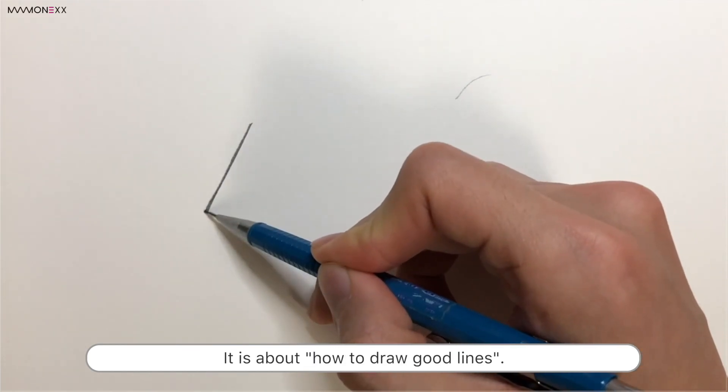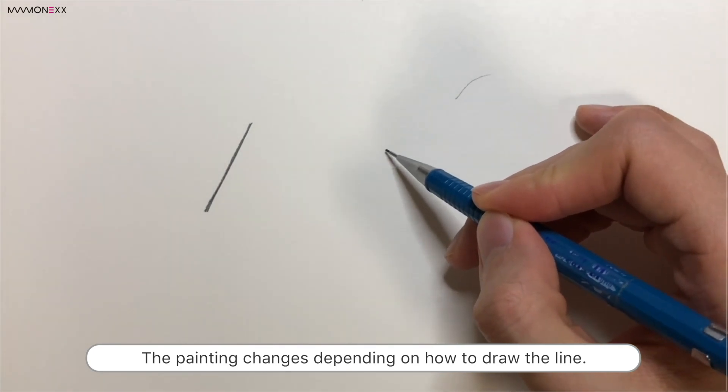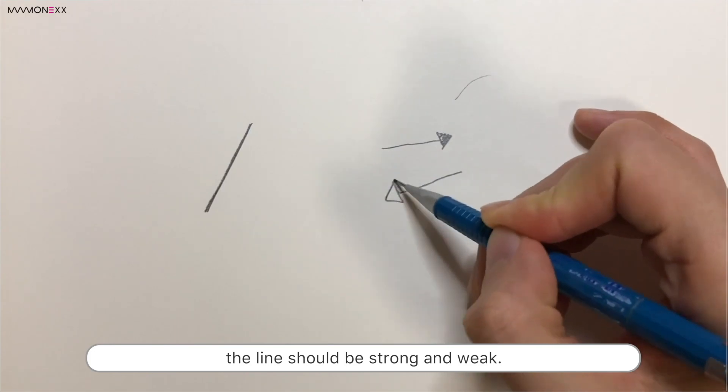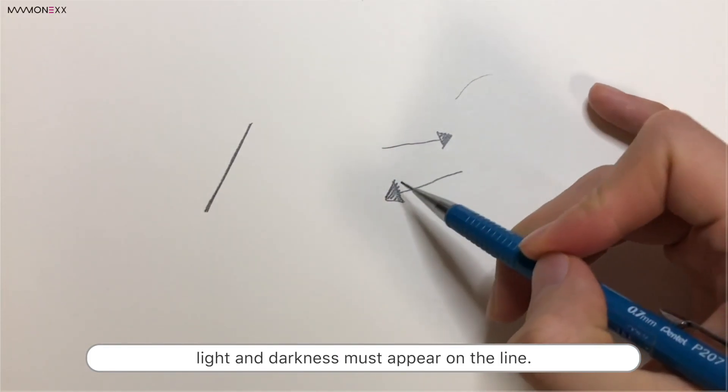It is about how to draw good lines. The painting changes depending on how to draw the lines. Based on the starting point, the line should be strong and weak. In other words, light and darkness must appear on the line.